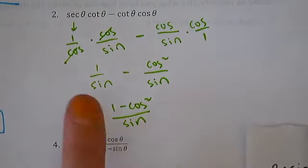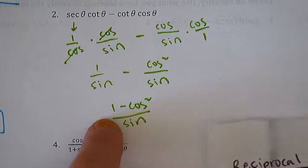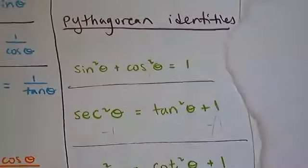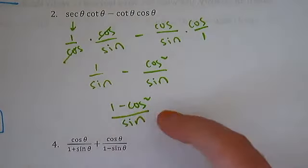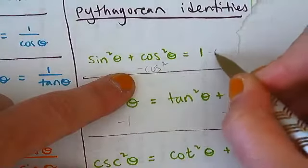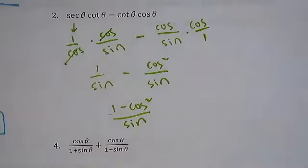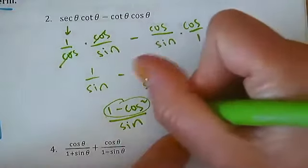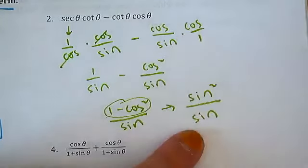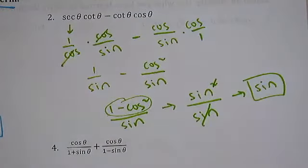Think about it — I just gave you the same tip in the previous problem. If we see a trig squared and a one, what can we use? The Pythagorean identity. I want one minus cosine squared, so I subtract cosine squared to both sides. Now I have one minus cosine squared, which equals sine squared. So the whole numerator is sine squared, still divided by sine. Cancel — which is sine.